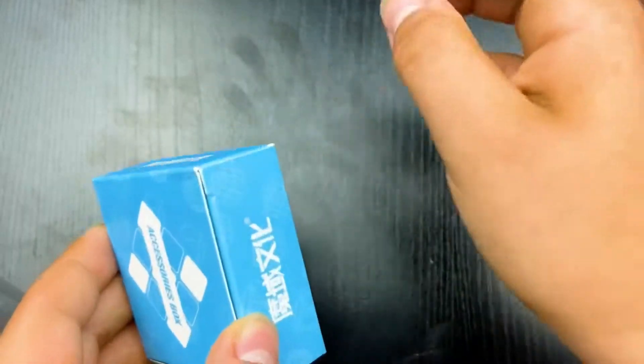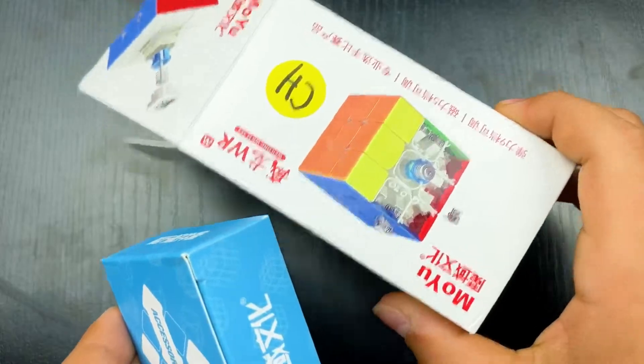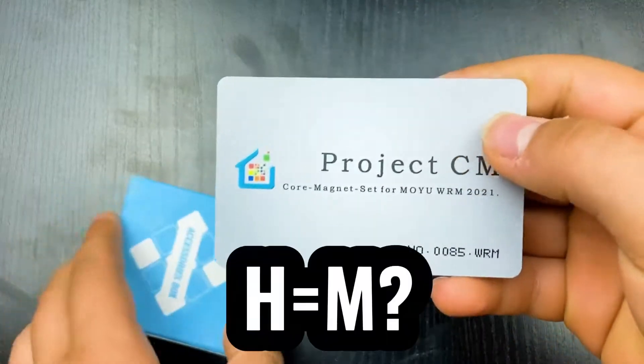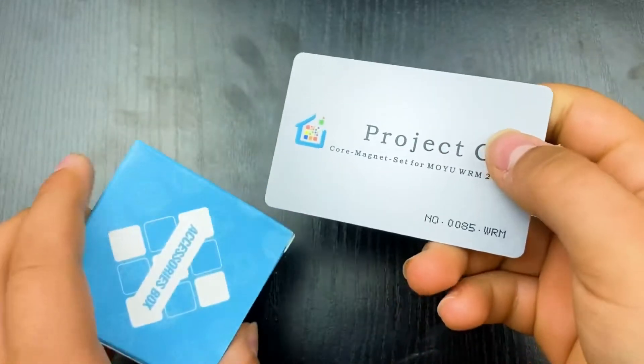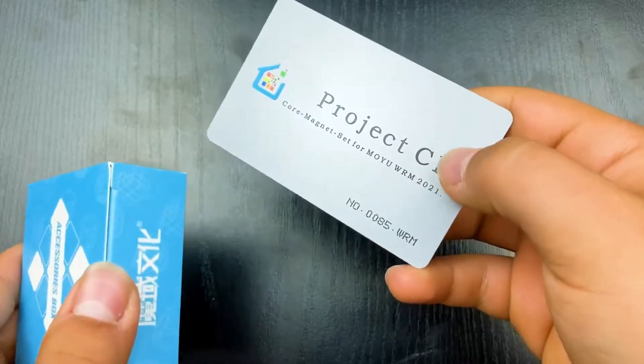Okay, and then here's the accessory box. Now just a quick note, this is CH and this is CM. I'm not really sure why. I do not know why it's M versus H but the C is the same. I have no idea why the M and the H are different.